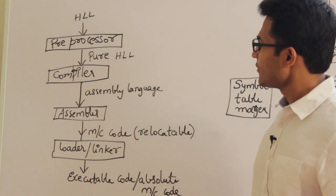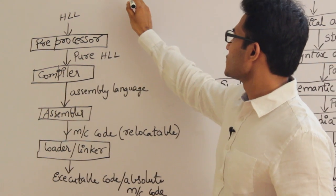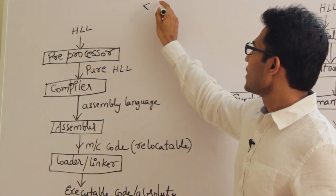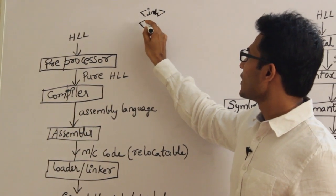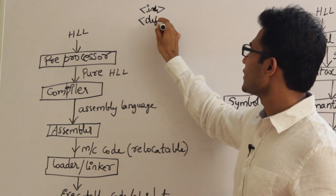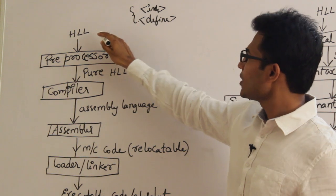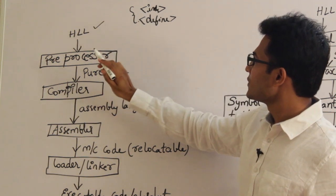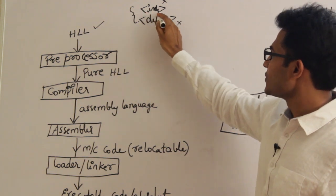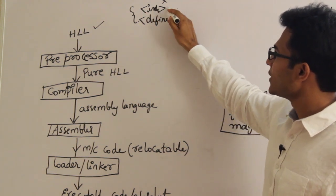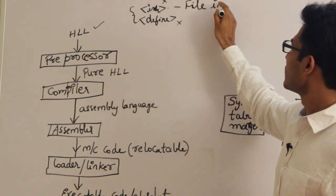For example, what is a high-level language and what is pure high-level language? If you write a C program, the starting lines are going to contain hash include or hash define. So if a program contains such lines, then it is called high-level language. The pre-processor is going to remove these lines — removing hash include by including the file. That is also called file inclusion.